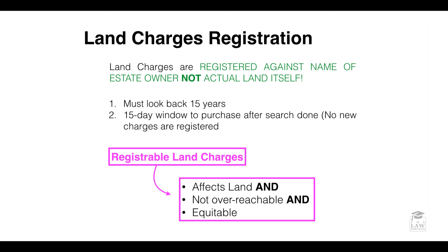There are several types of registrable land charges. These affect the land, they are not overreachable, and they are equitable. Remember, there are three forms in which an equitable right can be subsisting in relation to unregistered land: either as a land charge, an overreachable right, or by way of doctrine of notice. In the next lesson, we will look more broadly at land charges registration.